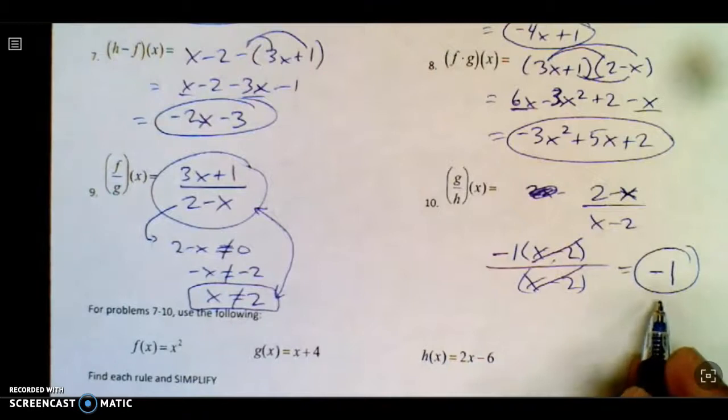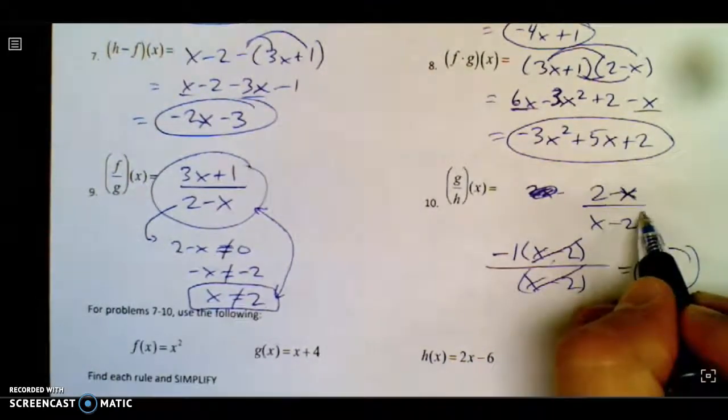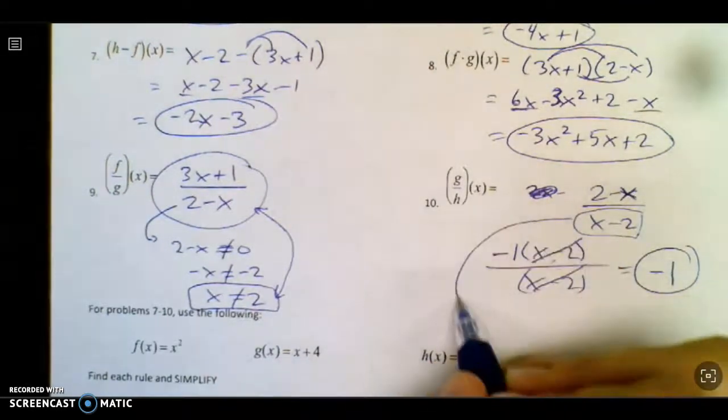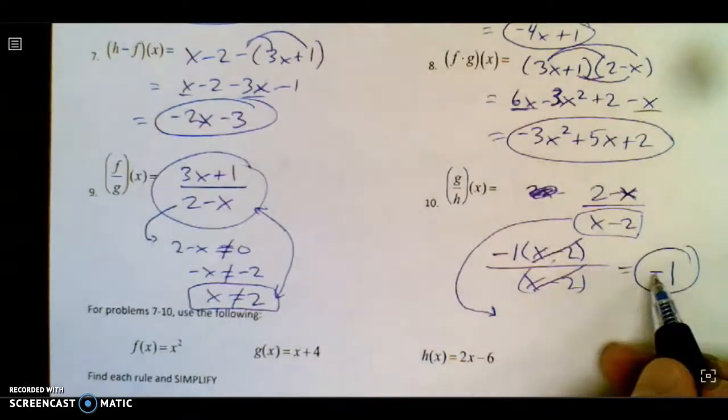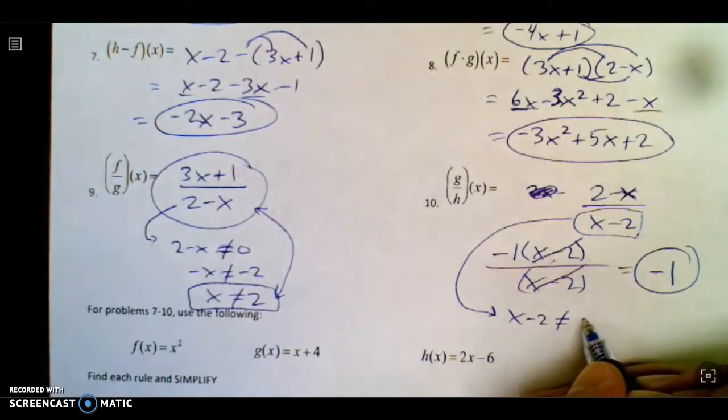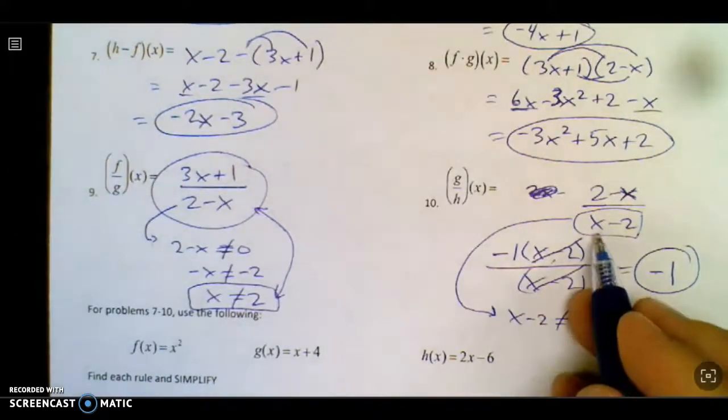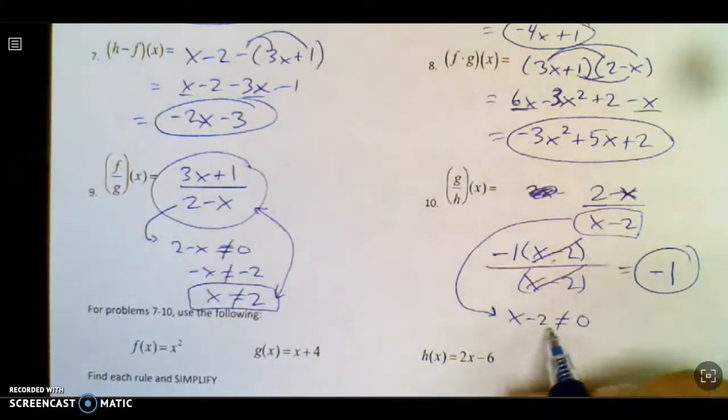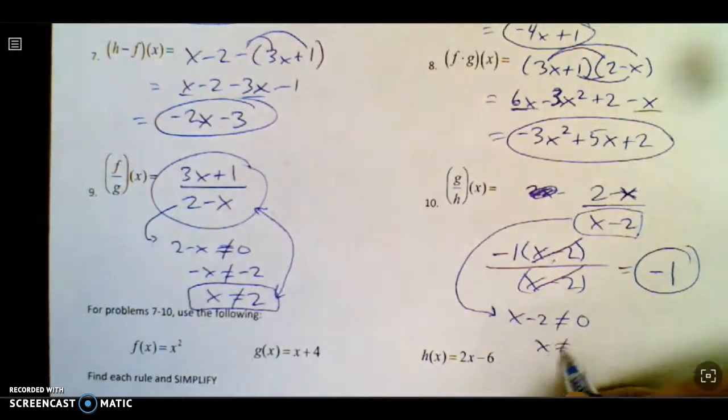Seems like there's no domain restrictions. But you always have to do that domain restriction on the original problem. Don't do it on the end where stuff is already canceled. Do it on the beginning part. x minus 2 is not allowed to equal 0. And then you move the 2 over.